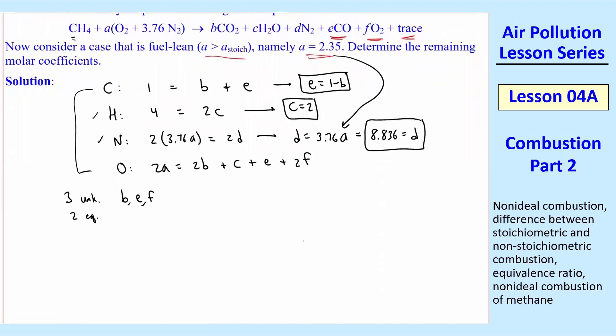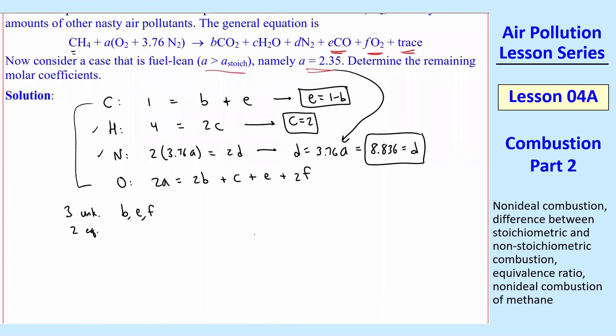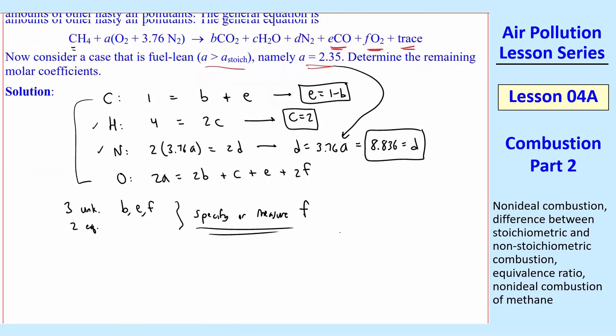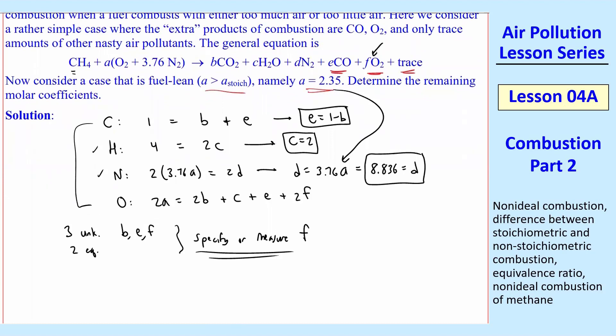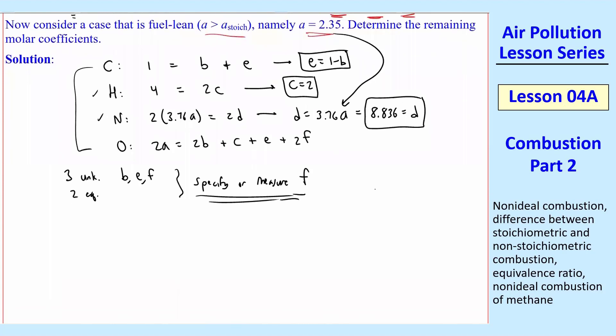So what are we going to do? Well, it turns out that we don't have enough information. And so you're going to have to know something, either E or F or B. One of these is going to have to be known. So what we can do is solve simultaneously. Let's suppose that we'll specify, or typically what we do is measure, F. So we'll look at how much of the oxygen, F is this term with the oxygen, how much of that oxygen is actually passing through and not interacting, not burning anything else. It's not oxidizing anything. It just passes through. So if we specify F, we can solve for everything else.